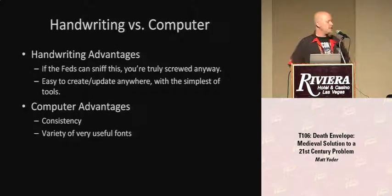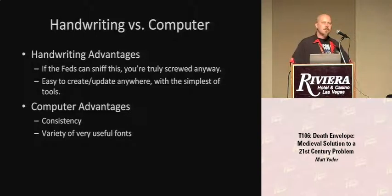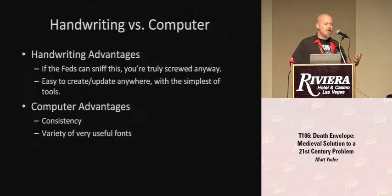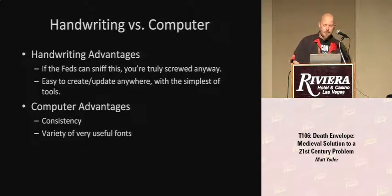Now we start to get into thoughts about creating a death envelope. Chances are most of your information is going to be on paper. This is the way I trend toward, largely because it's easily understandable — your grandmother, if necessary, can access a piece of paper in an envelope. There are some advantages to handwriting. There's some paranoia that says if I put something in a computer, it leaves enough of a record someone can get to. If you're going with handwriting, you dodge that whole thing.